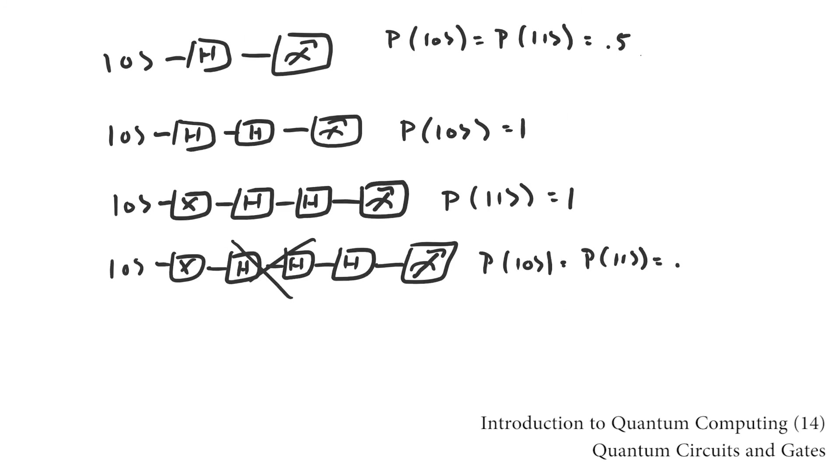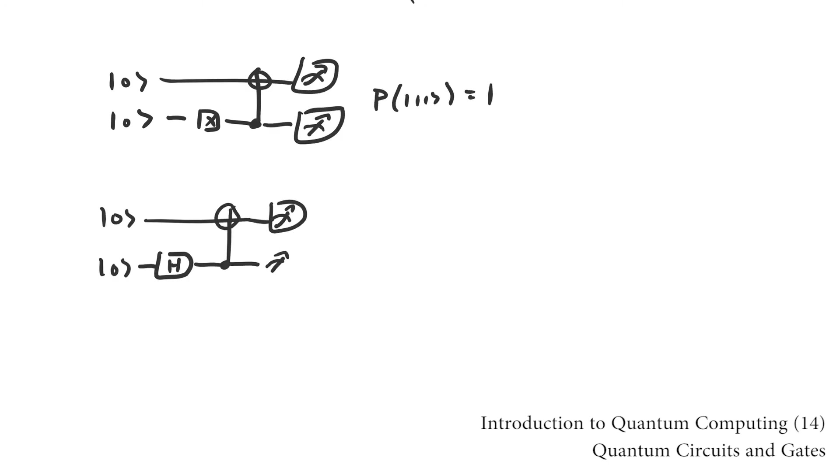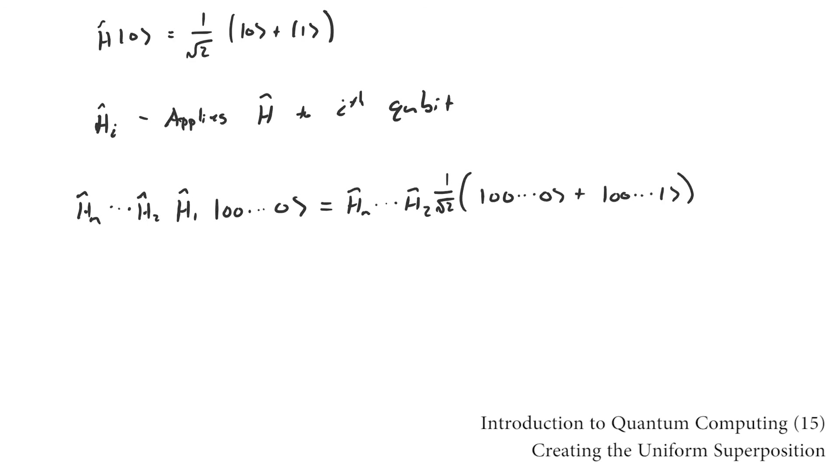The most common two qubit gate is the controlled NOT gate. It applies a NOT gate to one of the qubits whenever the control bit is in the state 1 and does nothing if it's in the state 0. None of the circuits we've looked at so far do anything terribly useful. So we're going to look at one that does. Quantum computations usually begin with the qubits in the state 0. The first step of most quantum algorithms is to transform the state into the uniform superposition. This is done by applying a Hadamard gate to each of the qubits.